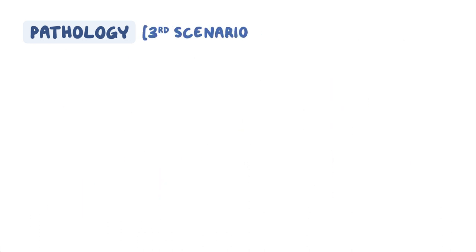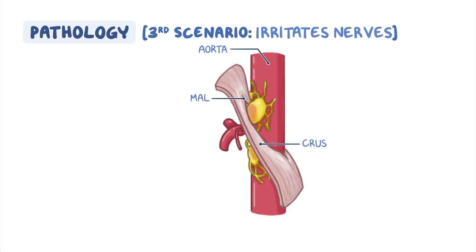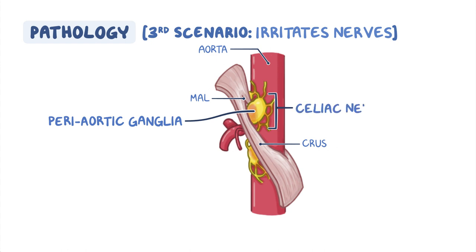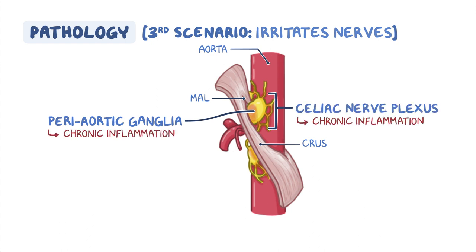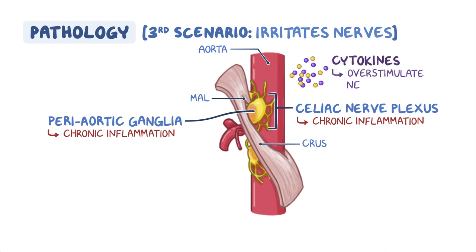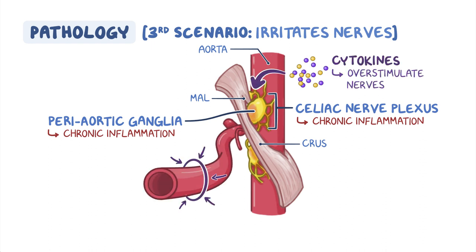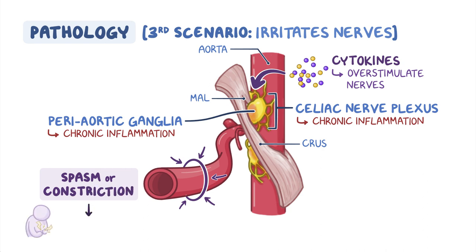The third scenario is where compression irritates the nerves surrounding the celiac artery, which includes the periaortic ganglia and celiac nerve plexus, causing chronic inflammation in that region. The inflammatory mediators, like cytokines, over-stimulate nerves to keep firing and cause spasm or constriction of the celiac artery branches going to the stomach and small bowel, resulting in symptoms.